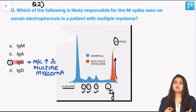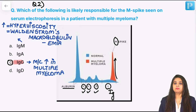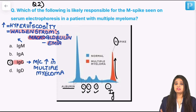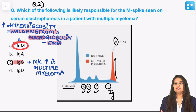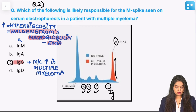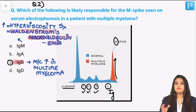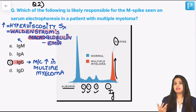Most common is IgG. A disease in which IgM tends to increase is Waldenstrom's macroglobulinemia. 'Macro' means the antibody with the maximum molecular weight, which is IgM. Whenever IgM increases in the blood, it makes the blood very thick and viscous, resulting in hyperviscosity syndrome. Because of this, the patient will have hemorrhages, blurring of vision, retinal hemorrhages, visual disturbances, and headaches — all hyperviscosity syndrome symptoms.